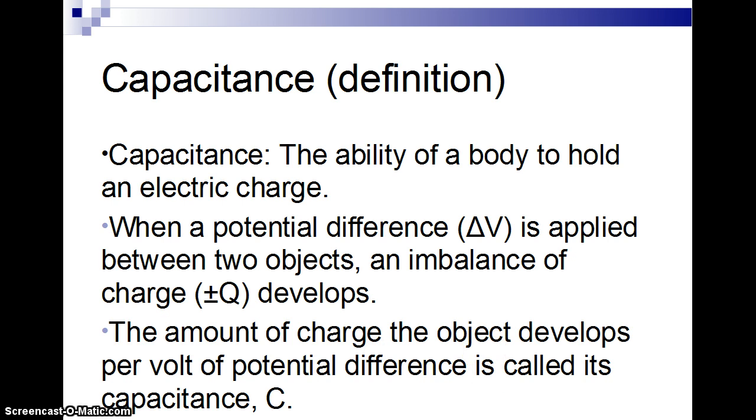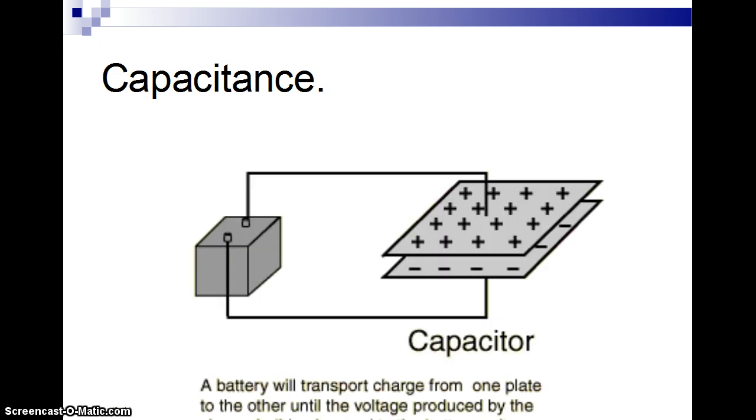And that capacitance C, capital C, is the amount of charge per volt of difference. All right, so you hook up a battery. You have these plates. The charge gets pumped from one side to the other. So you have positive on one edge and negative on the other. This is basically a way of storing charge or moving charges from one place to another.